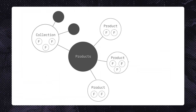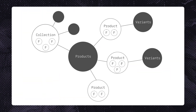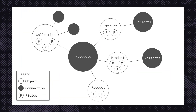You can traverse through GraphQL to build your query in the shape you want. For example, you can query a collection and its metafield. From there, you can query the products within the collection. You can go even further and query individual fields within each product, even variants within those products.